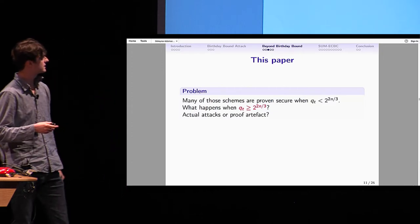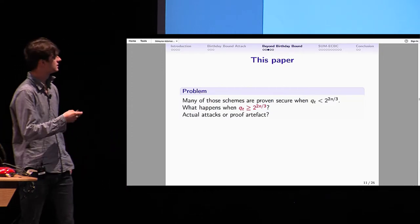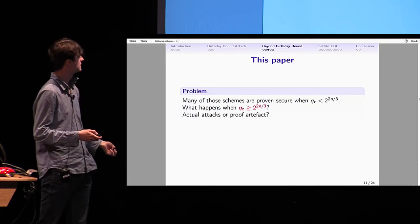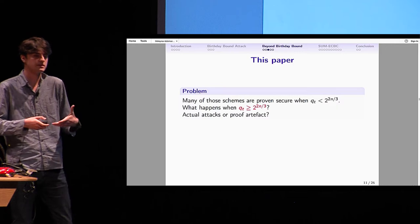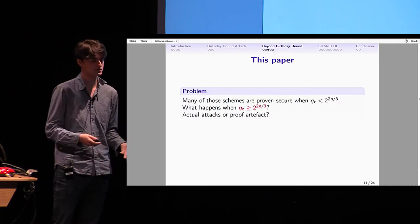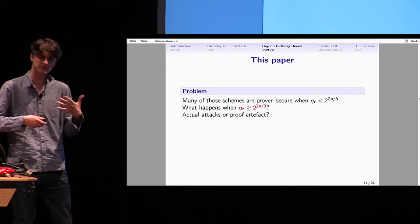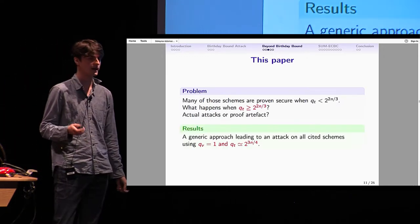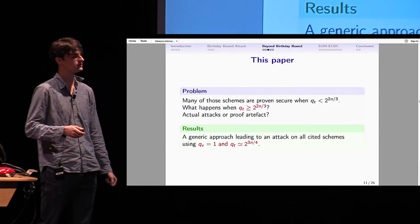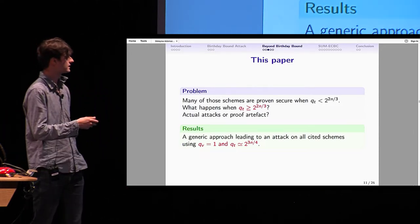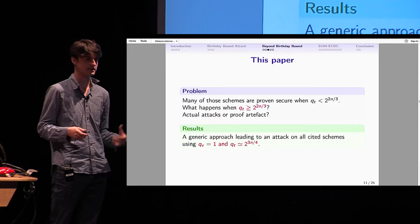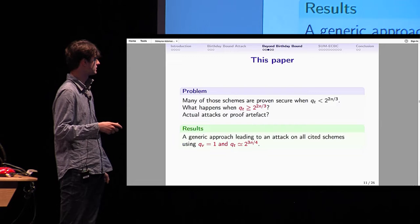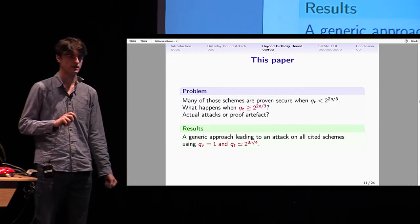In our paper, we asked the question: many of those schemes are proven secure when Qt is less than 2^(2n/3). But what happens when you give more power to the attacker? What happens when Qt is more than 2^(2n/3)? Are there actual attacks? Can you do something? Or is it just a limitation of the proof techniques? Our result is a generic approach that leads to an attack on all the schemes cited before, using one verification query and in the order of 2^(3n/4) tagging queries.